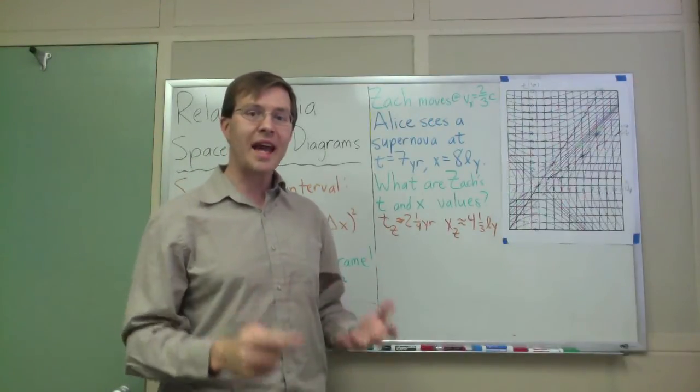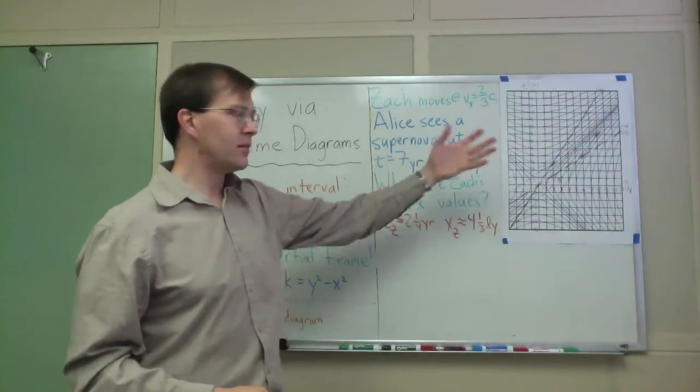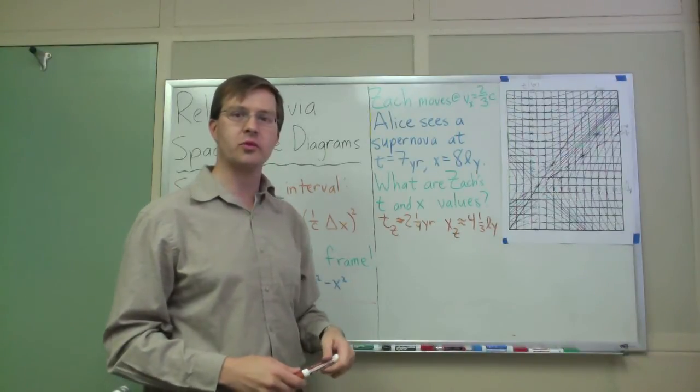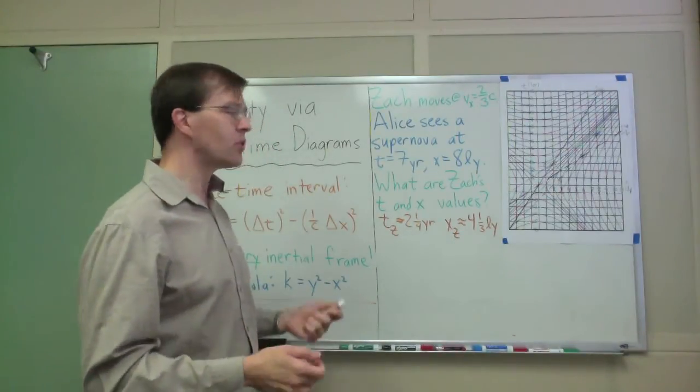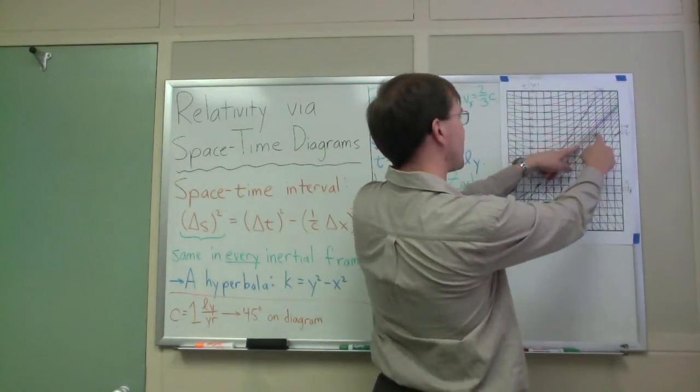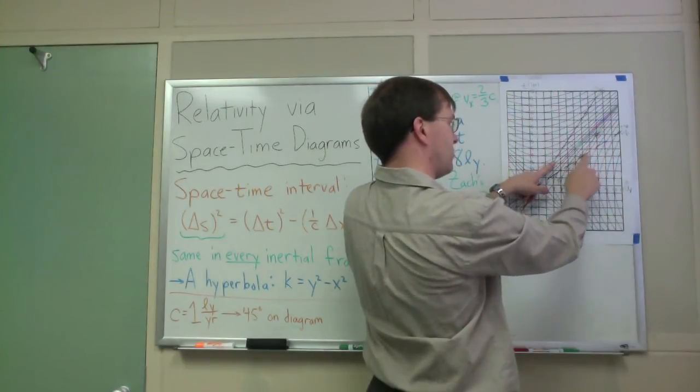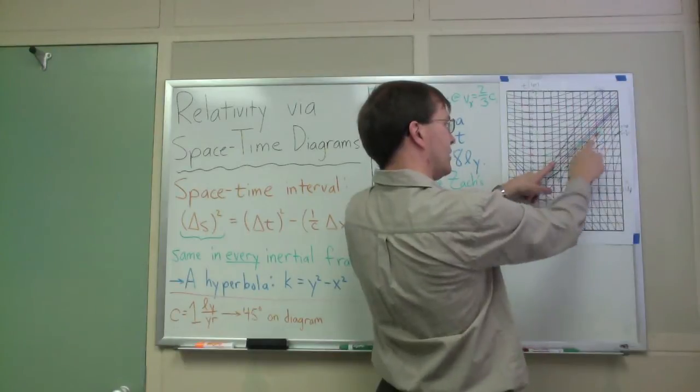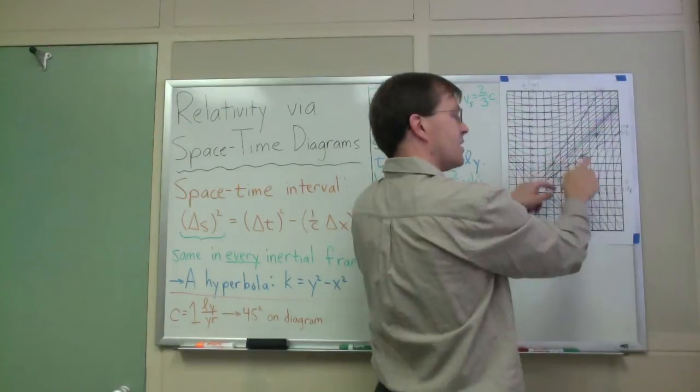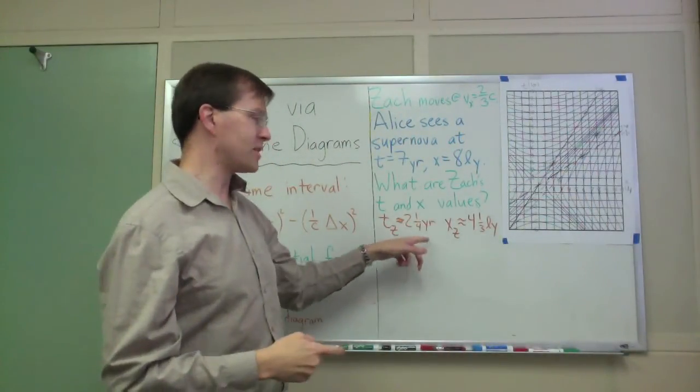And again, this all comes directly out of using hyperbola graph paper to find at least eyeballed estimates of numerical values for calculations and relativity. And I haven't had to do a single calculation. All I have to do is look at the event and say I'm going to follow time slices back to Zach's path to find the time. I'm going to follow spatial travel parallel to Zach's travel back to the t equals zero slice to find the distance. And that will give me my answer for what Zach would say those coordinates are.